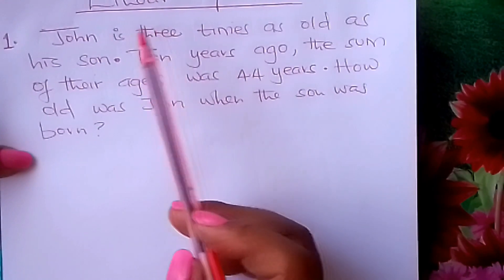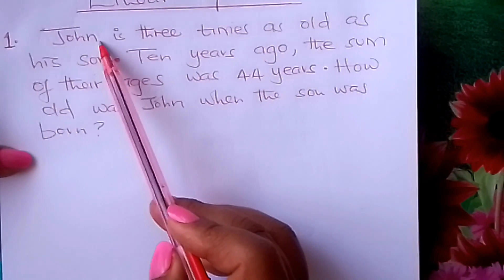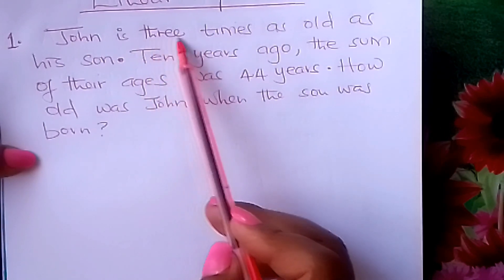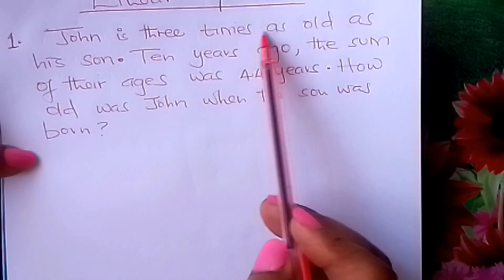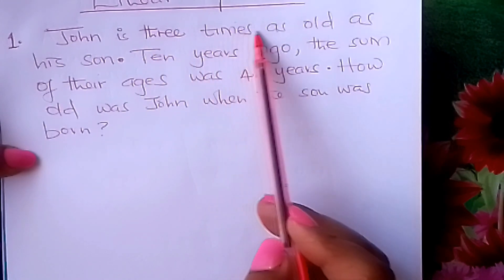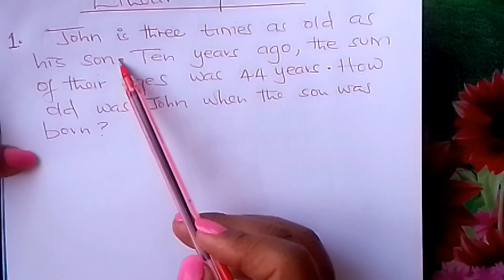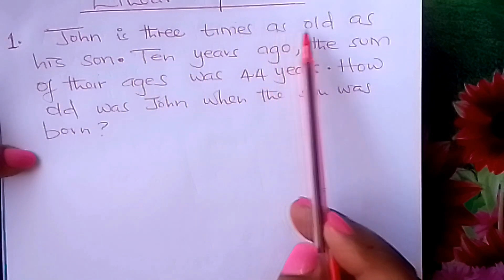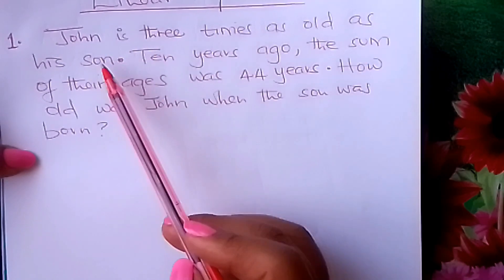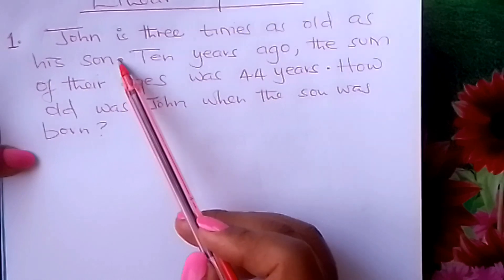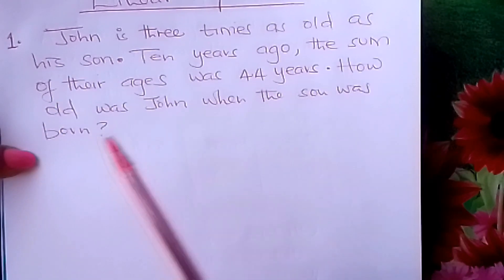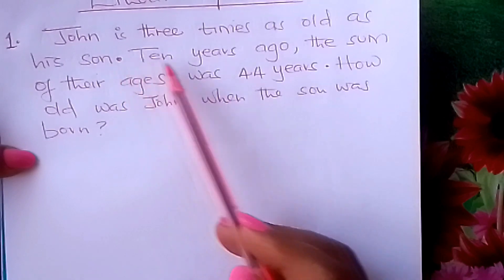Look at the first sentence here. It is talking about their present ages — today's ages. John is three times as old as his son. So this first sentence is to do with today's age, or present ages.